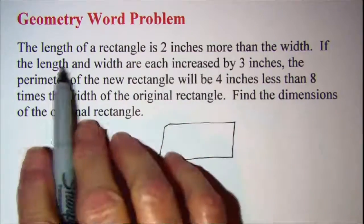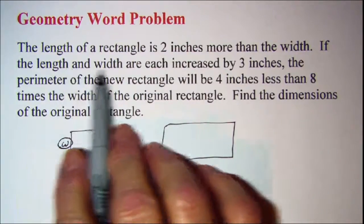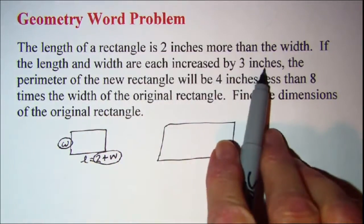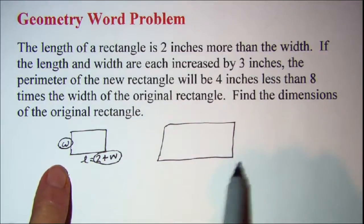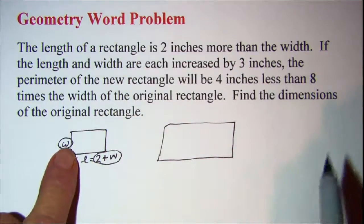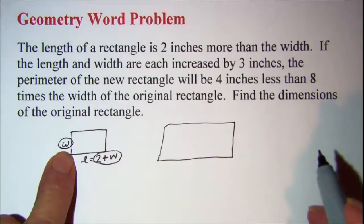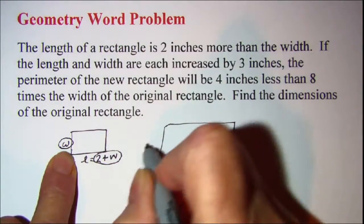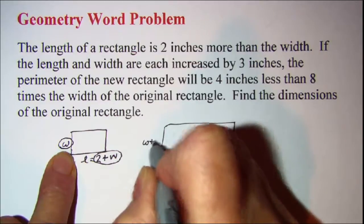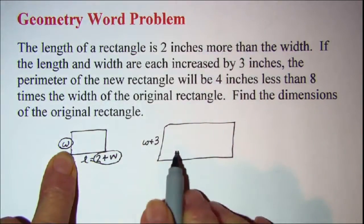Then the second sentence says the length and the width are each increased by 3. So I'll stop there so that I can label my new rectangle. If I increase my width by 3, I now have W plus 3 as the width of my new rectangle.